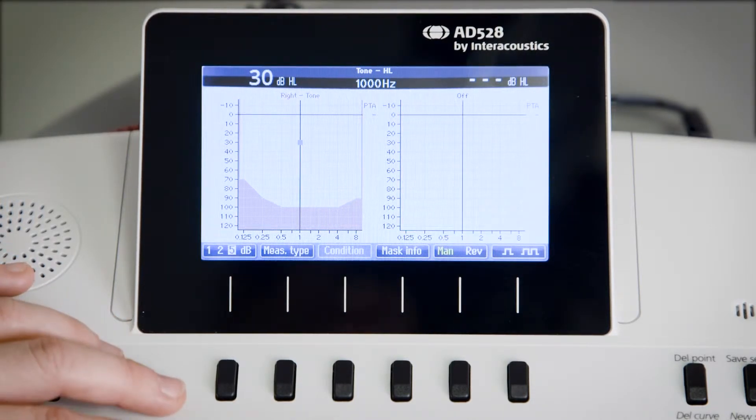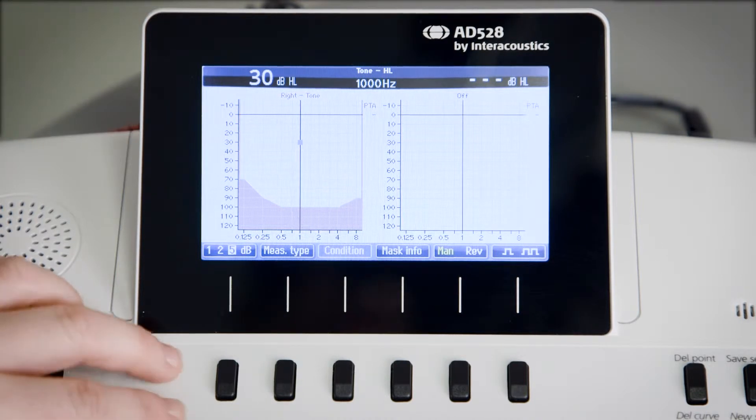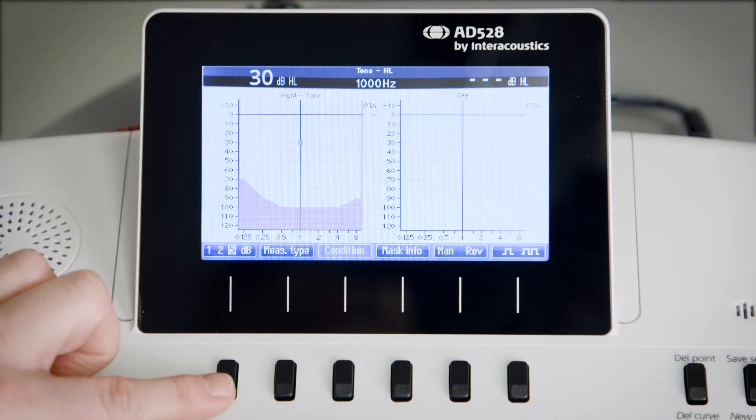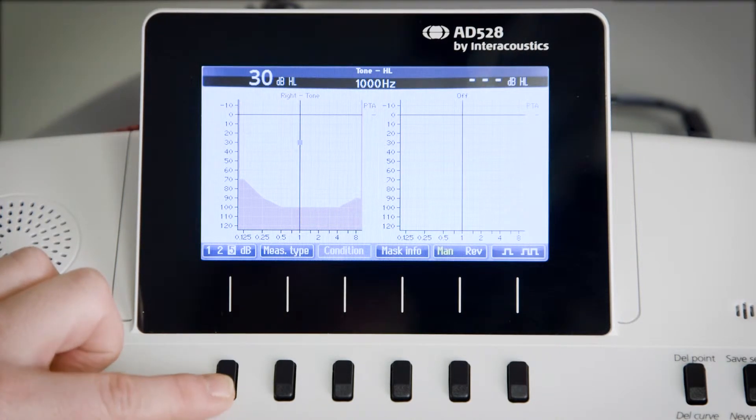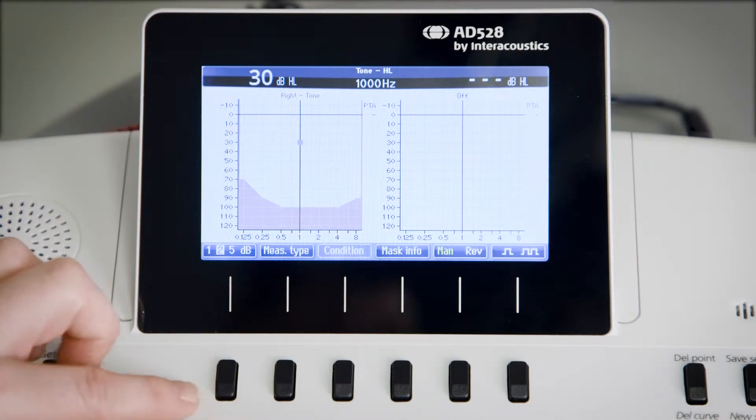When we're in the tone audiometry screen, we have six keys. The first one is the ability to toggle between the dB step size: 5 dB step size, 1 dB step size, or 2 dB step size.